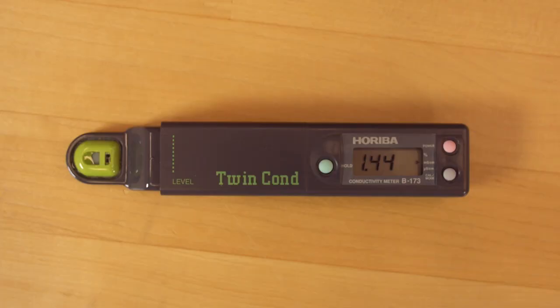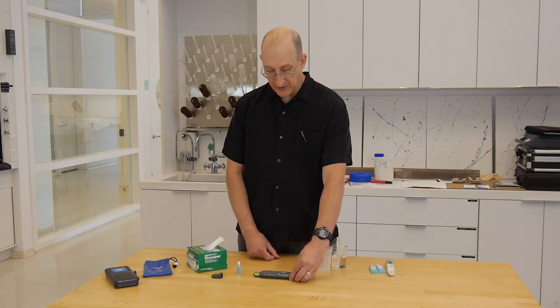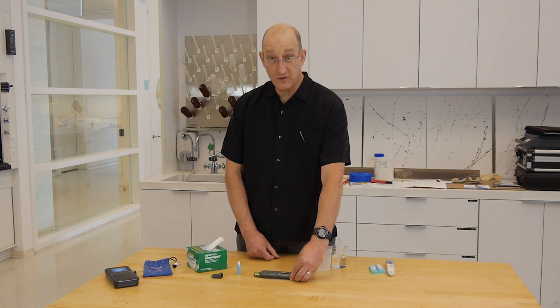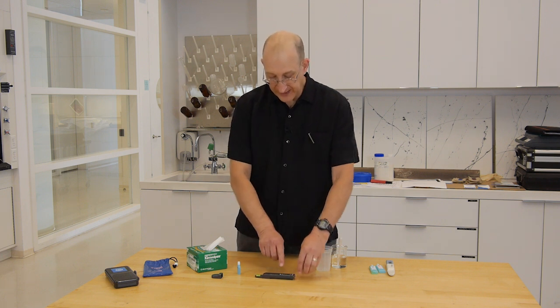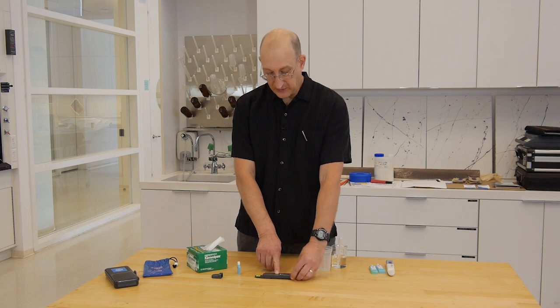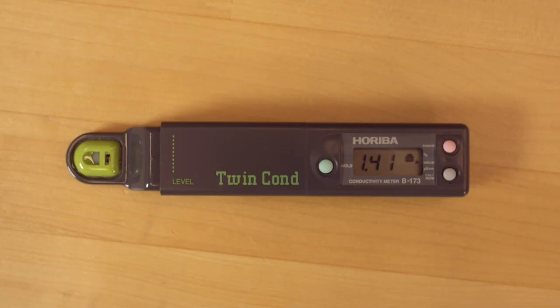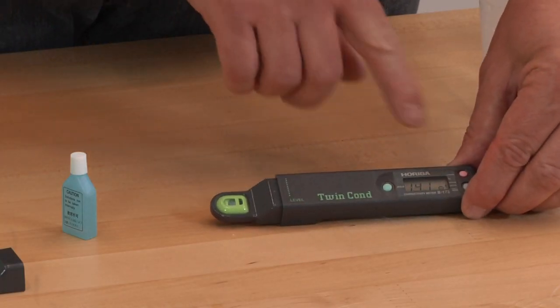Wait for the reading to stabilize, which is indicated with a small happy face, which we now have. You can see right now we're reading at 1.44 millisiemens, or 1,440 microsiemens. We push the calibrate button and go into calibration mode. You can see the little symbol there for calibration mode. It's calibrated to 1.41 millisiemens, and when we get a happy face, we're all done. So we have our happy face.